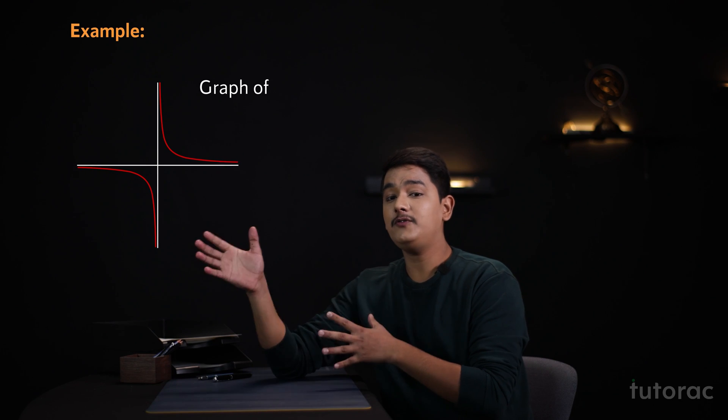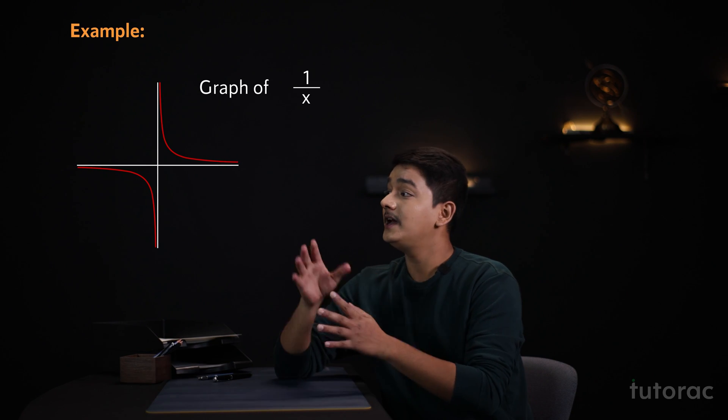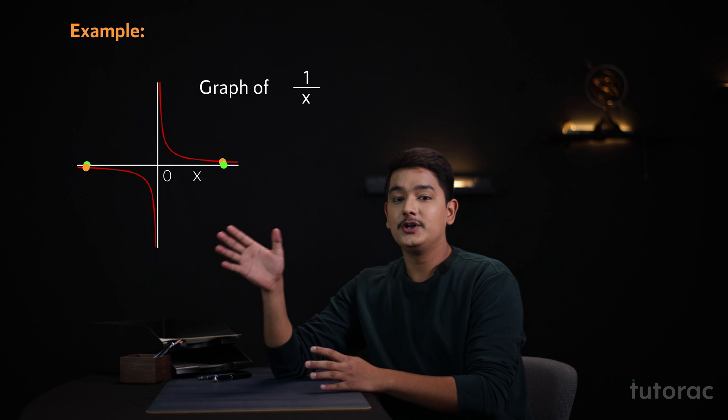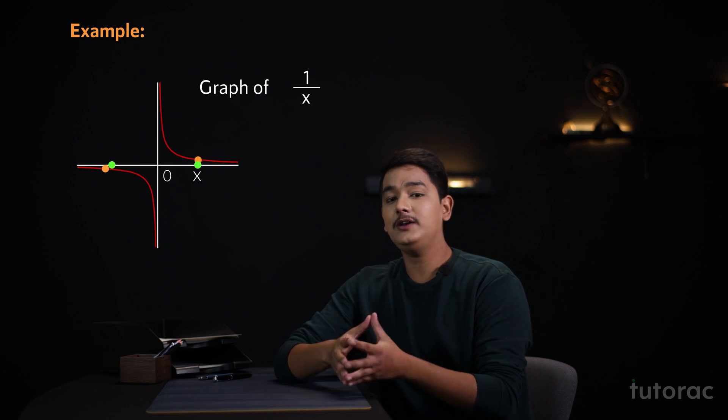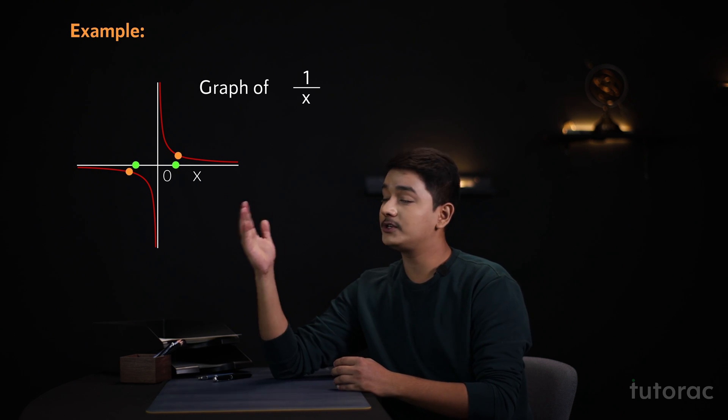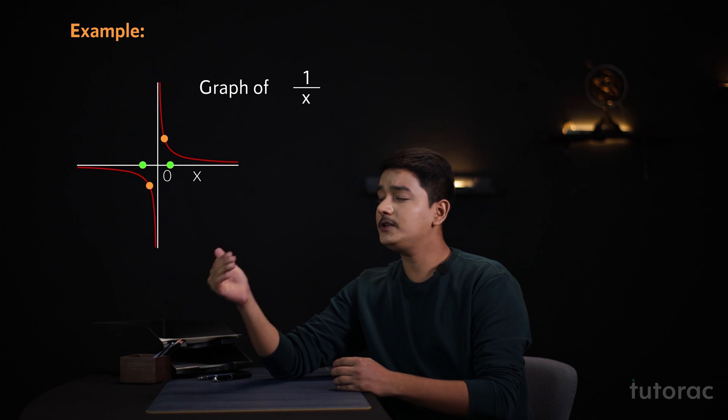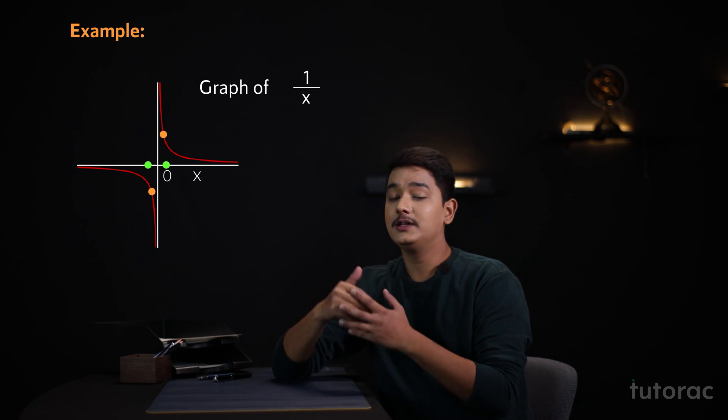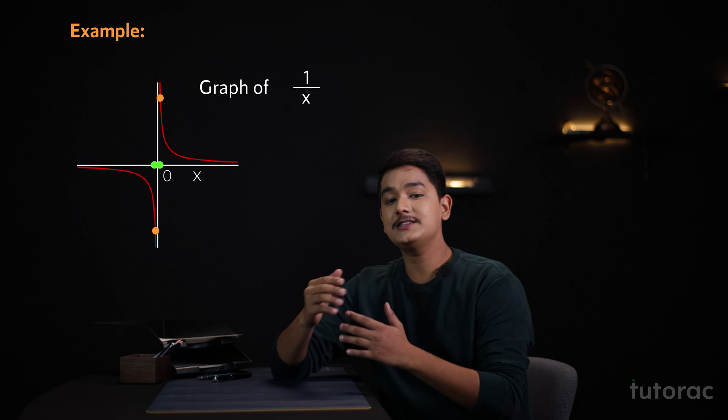If we take the graph of 1 by x here, then as x is approaching to 0, you can easily see that the value of 1 by x is approaching to infinity. And as we go closer and closer to 0, the value of 1 by x is getting larger and larger.